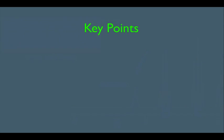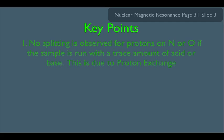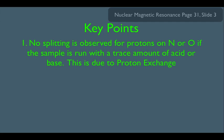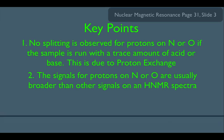So, what have we learned here? Key points. We saw number one, no splitting is observed for protons on nitrogen or oxygen if the sample is run with a trace amount of acid or base, and this is due to proton exchange. We also saw number two, the signals for protons on nitrogen or oxygen are usually broader than other signals on an HNMR spectra.